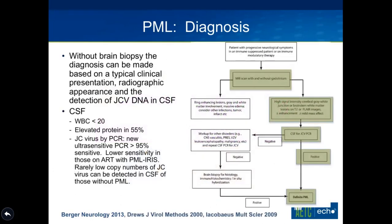Without a brain biopsy, a presumptive diagnosis is made based on the typical MRI appearance showing T2-weighted images that are intensely positive in the subcortical regions, and a CSF that is positive for JC virus by PCR. The CSF analysis usually has very few white cells and mildly elevated protein, but JC virus is detectable in most patients by PCR. The ultrasensitive newer assays have a sensitivity over 95 percent, though older assays had sensitivity only in the 70s. Low copy numbers are seen in patients with IRIS, and rarely in patients who don't even have PML.